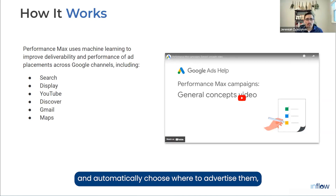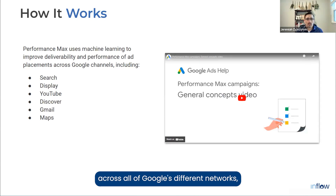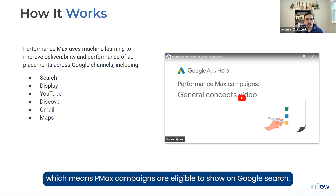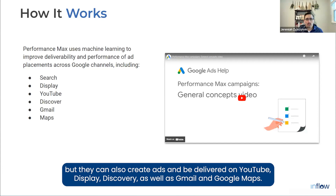PMax automatically chooses where to advertise and takes over the different bidding strategies as well. These campaigns are designed to improve the deliverability and performance of your ads across all of Google's different networks. PMax campaigns are eligible to show on Google SERPs similar to traditional search and shopping campaigns, but they can also create ads on YouTube, Display, Discovery, Gmail, and Google Maps.